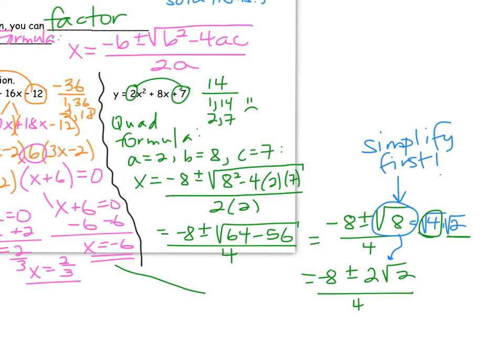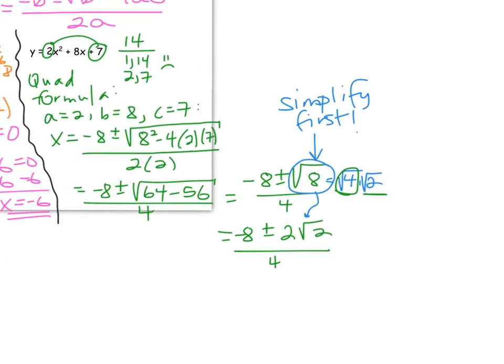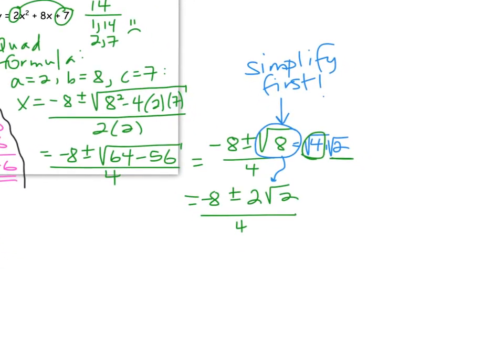To reduce this fraction, the numbers on the outside of the square root all need a common factor. 2 goes into all of them. What that means is if we divide by 2, just for the parts on the outside, we would get negative 4 plus or minus square root of 2 all over 2. That would be the exact answer for our x-intercepts. If we were sketching the graph, we would need to find the decimal approximations, or if we were solving an application problem.